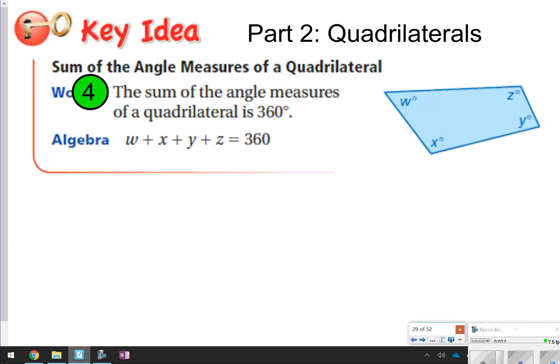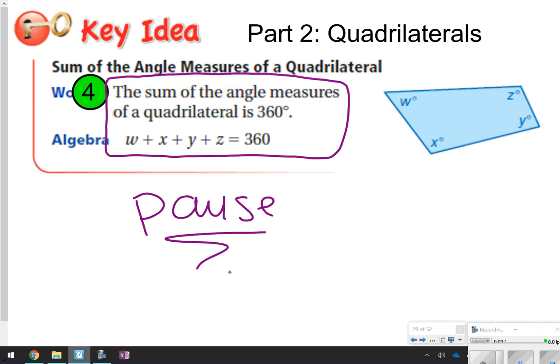The next part of our notes is going to talk about quadrilaterals. So in number 4 on your notes, you're going to write these two things. Whenever you add all the angles in the quadrilateral, which is a four-sided figure, you're going to get 360 degrees. So w plus x plus y plus z will equal 360. Go ahead and take time now to pause the video, copy down number 4 in your notes, and once you're done, click play.